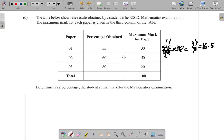For paper 2, it's 60% of 50. The marks that the person got for paper 1 was 16.5 marks out of the 30 available.